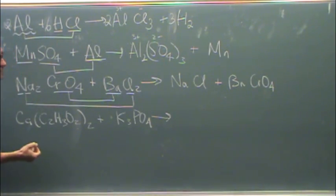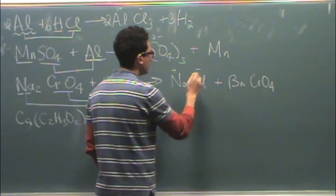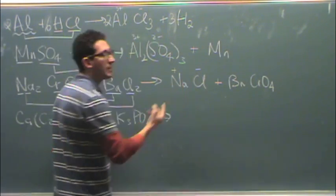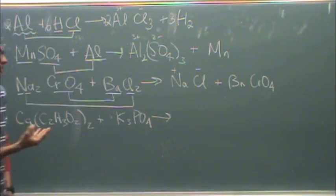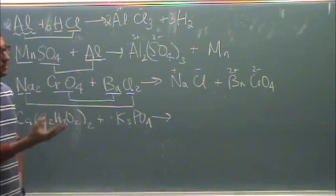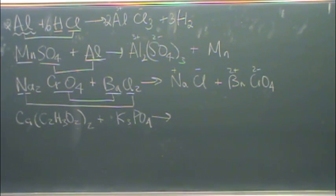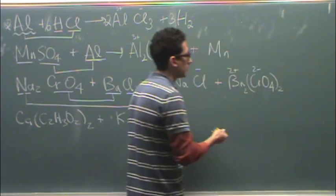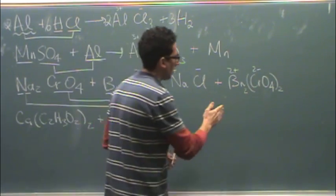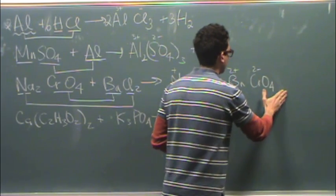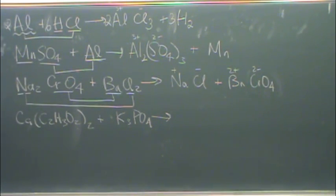So I'm going to write NaCl plus barium chromate. Now let's work on the subscripts. Sodium's plus one and chlorine's minus one. So just one of each will make sodium chloride neutral. I don't need any special subscripts. Barium is two plus and chromate is two minus. One of each of those will make that neutral. You wouldn't want to put a two here and a two here. You're typically, for this class, looking for the lowest common whole number.